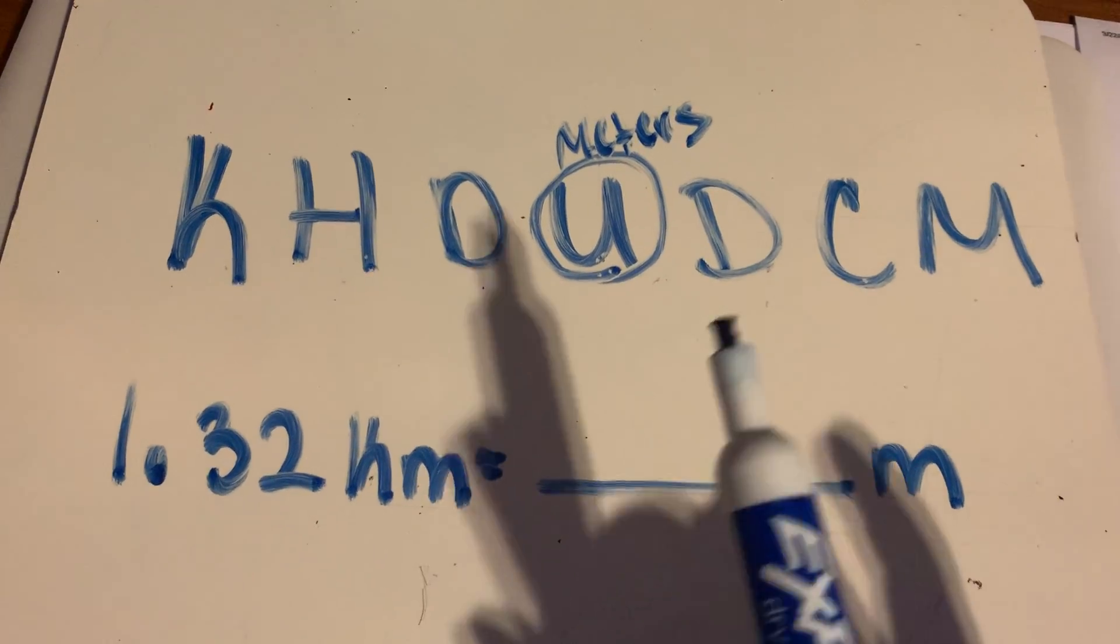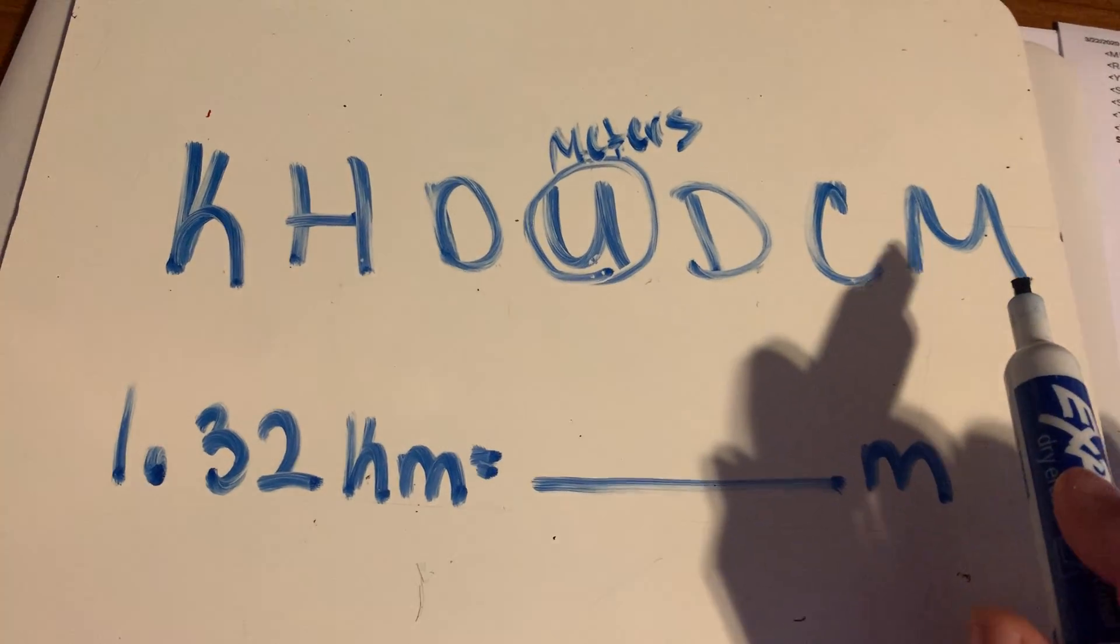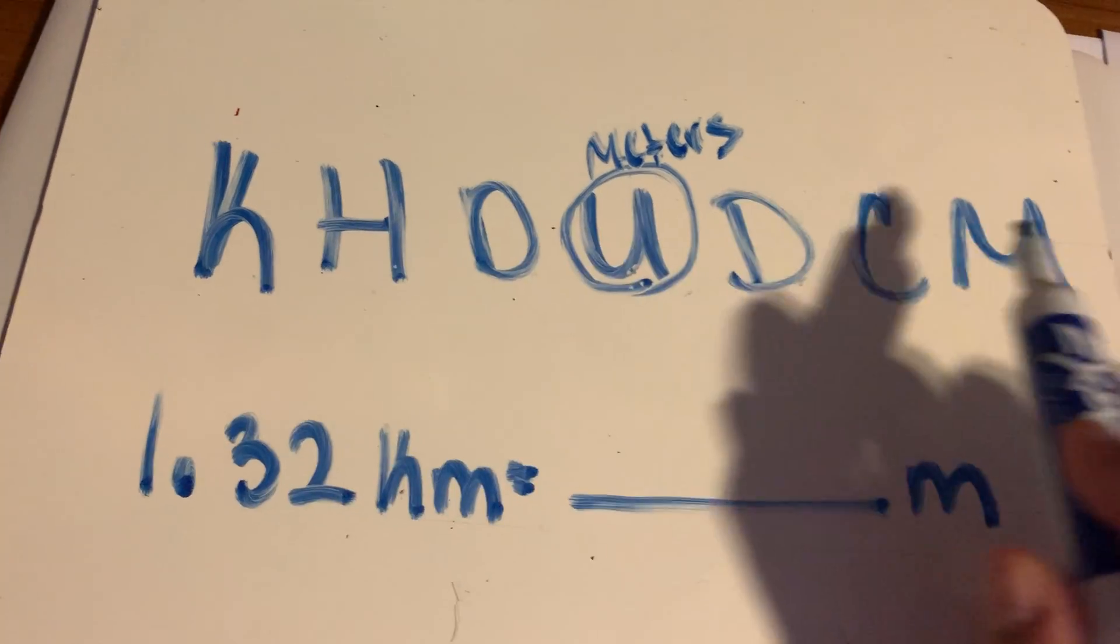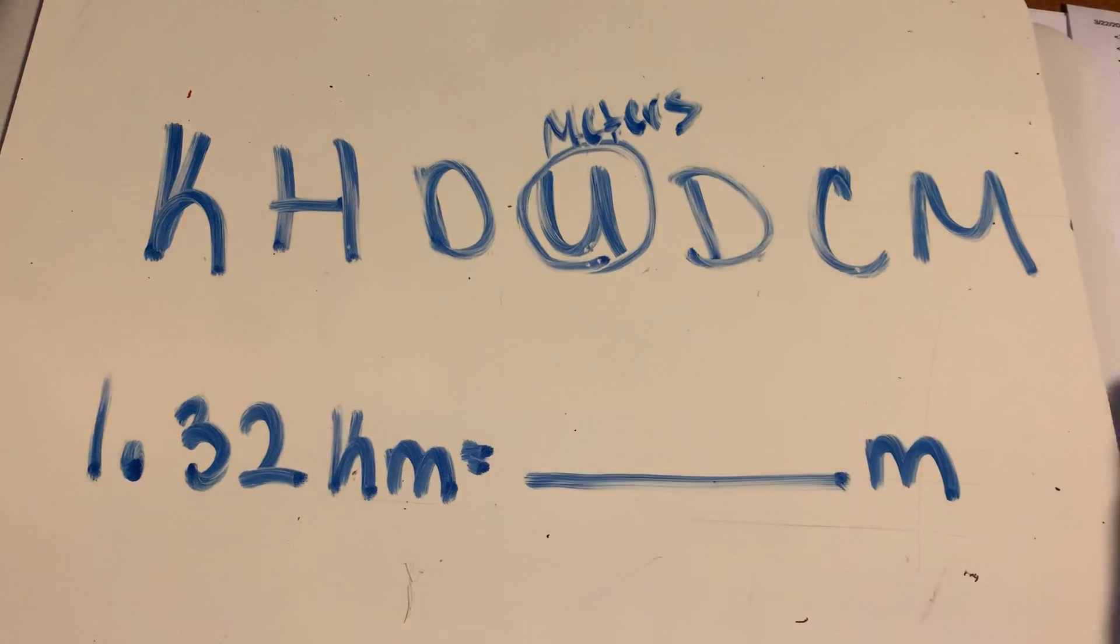So a good way for you to do all your problems today is to write this out. So I recommend getting a pen and a paper, doing it that way, and writing this out for every single problem, because this is going to help you to know which way you're moving and from which direction.